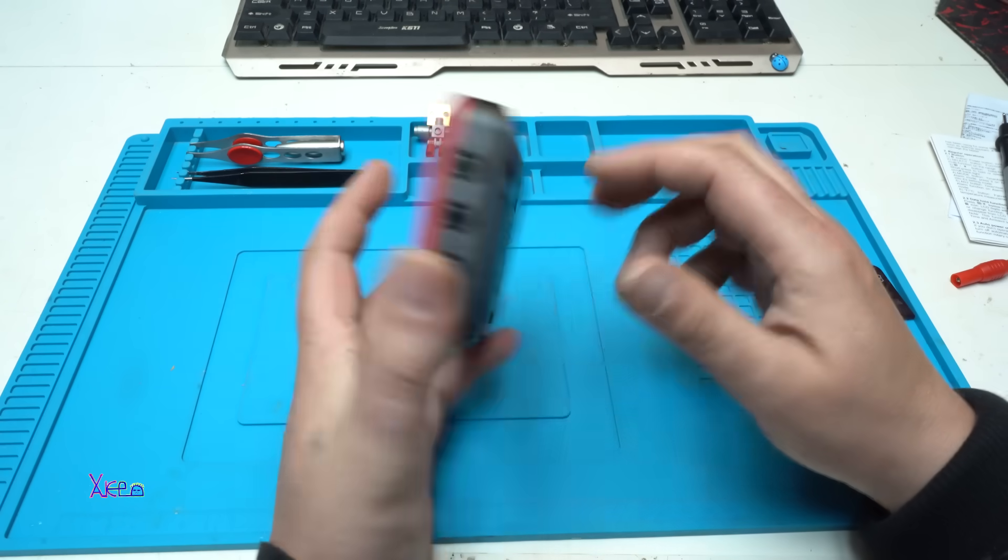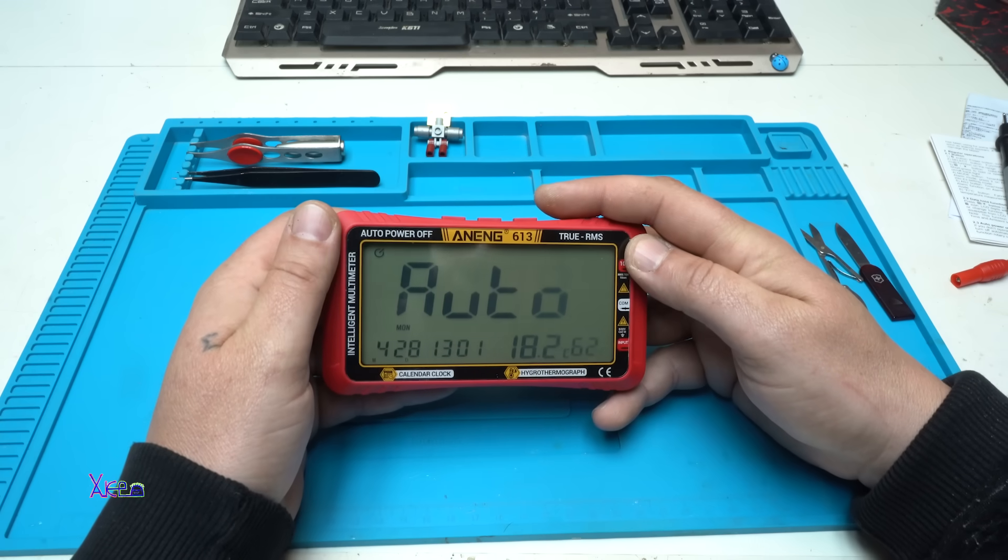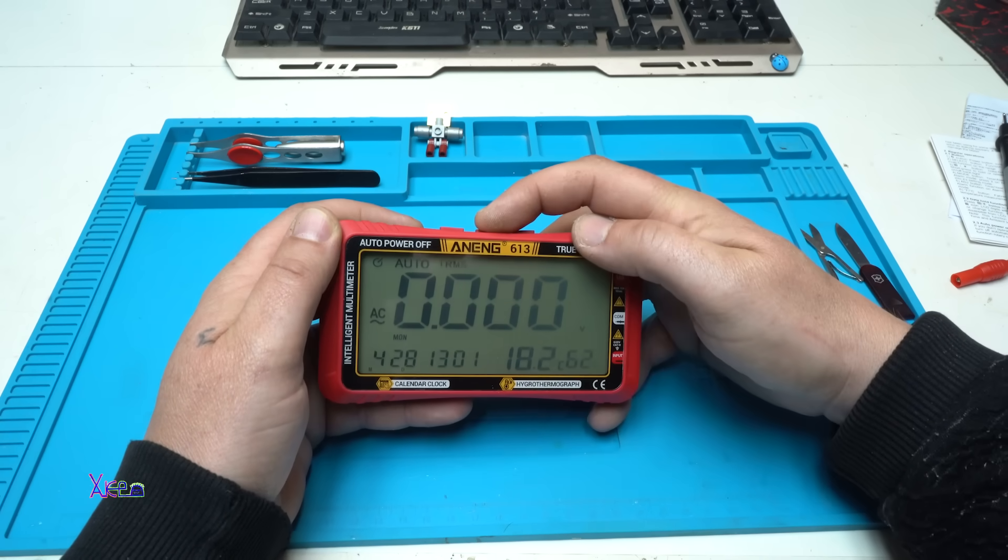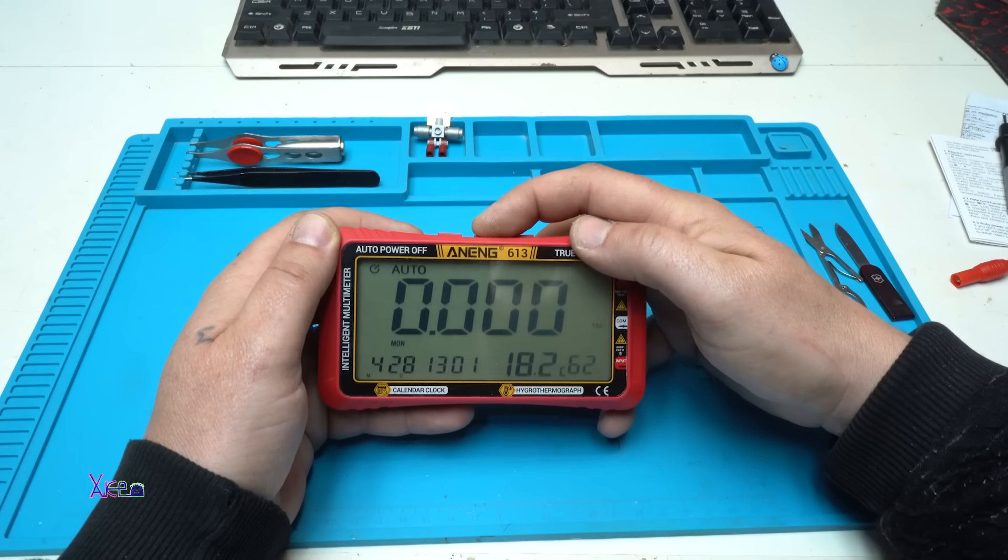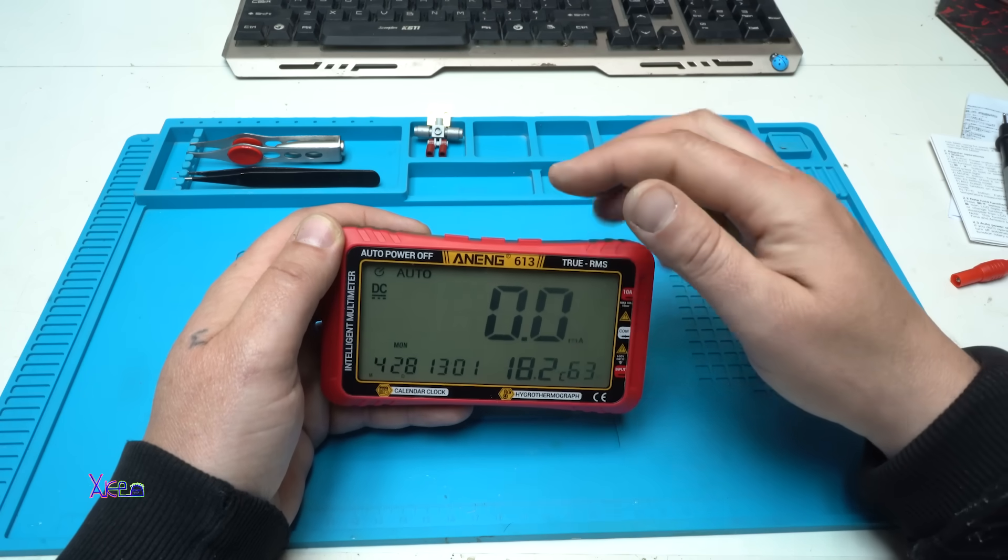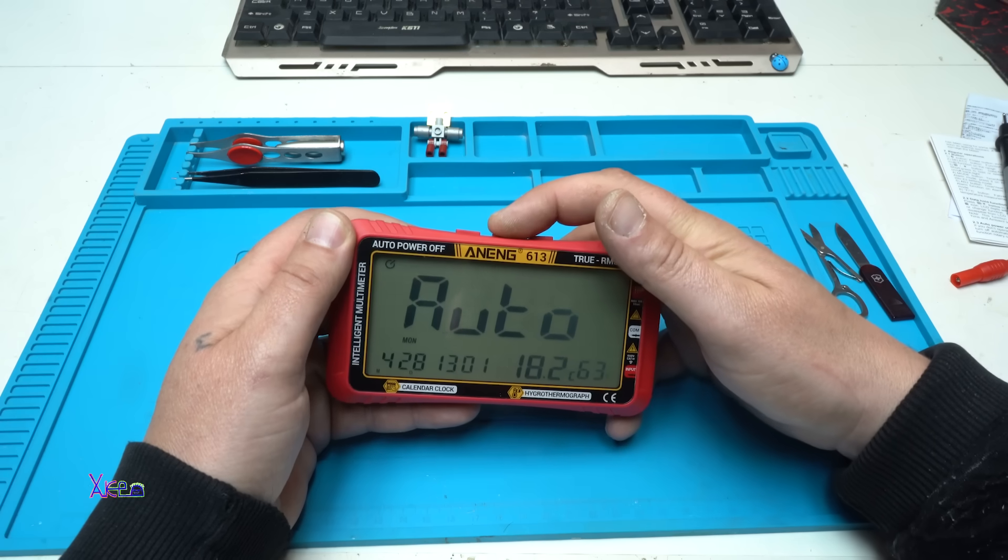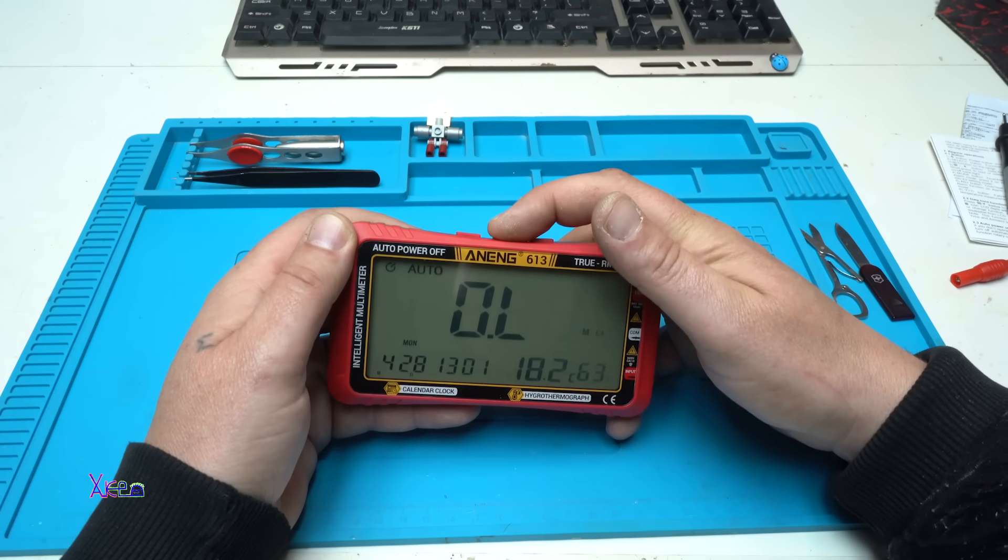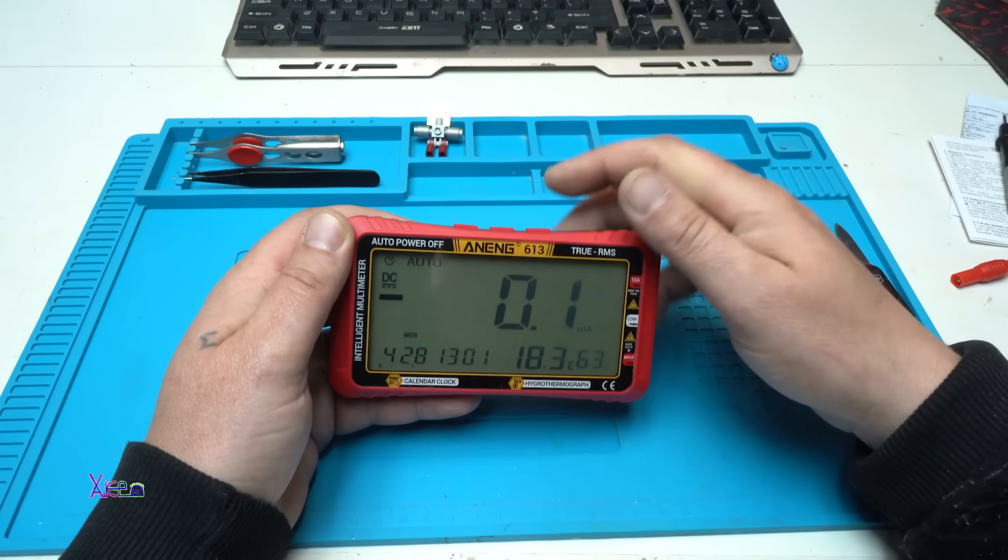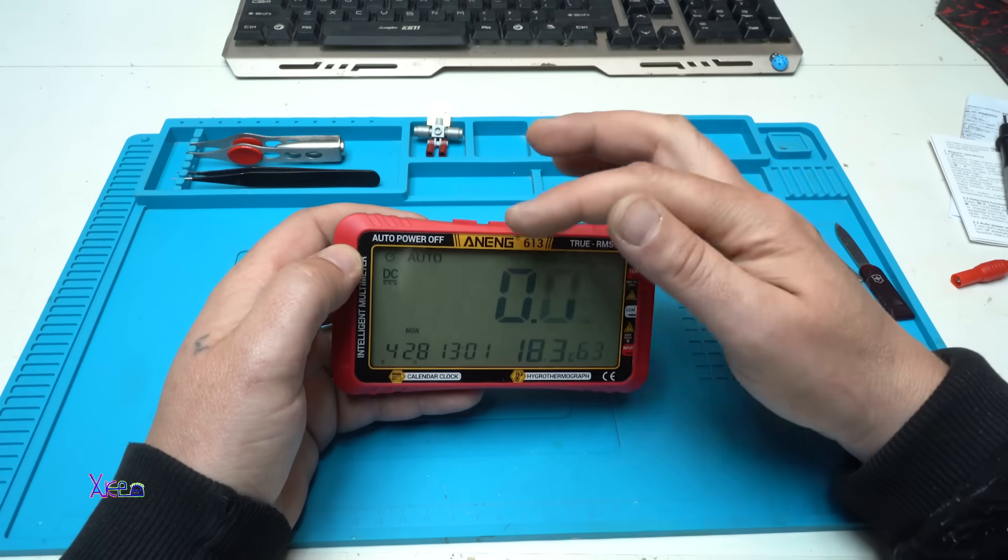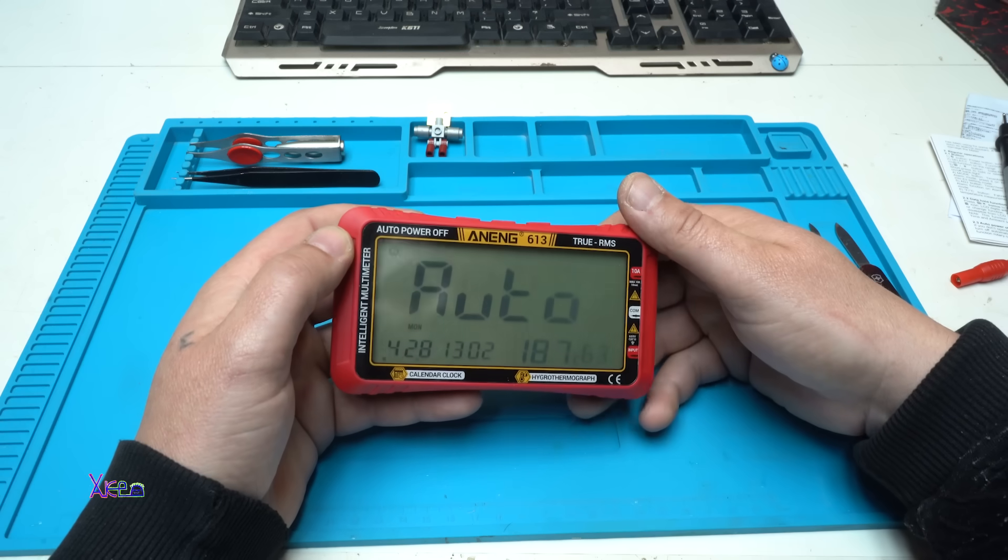Power on. I can hear that inside there is a relay. And I'm choosing different options. Right now the relay has activated when it's choosing DC and on auto.